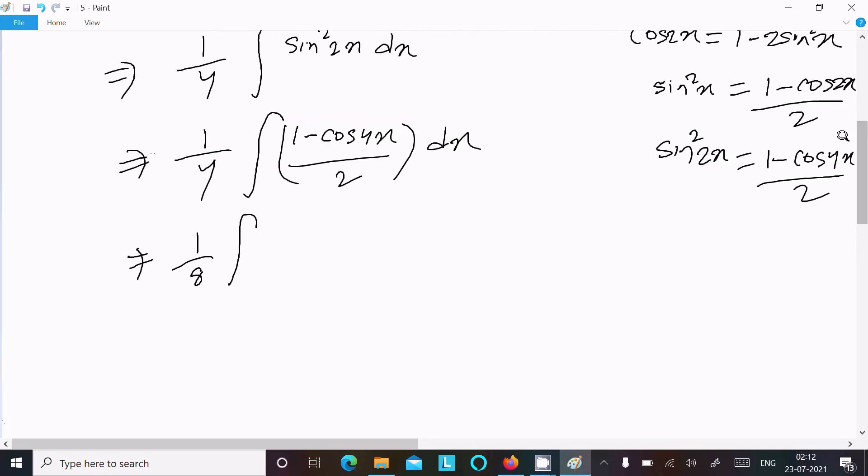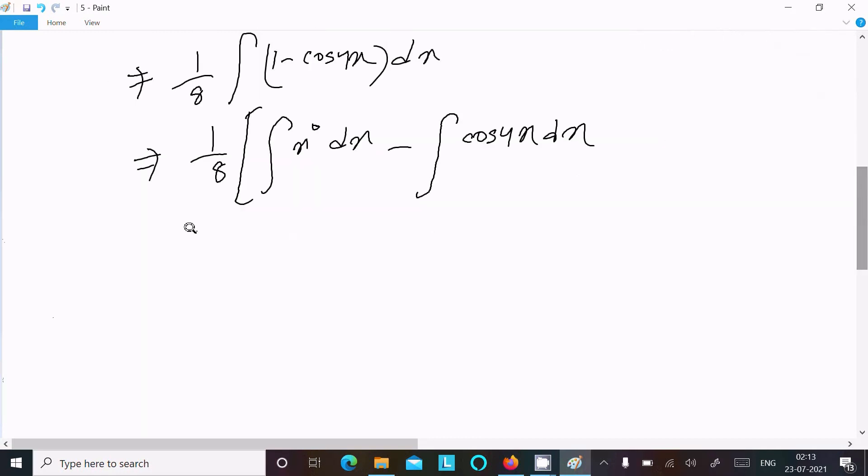So 1/8 times the integral. We can write this as the integral of 1 (or x^0) dx, then subtract the integral of cos 4x dx.